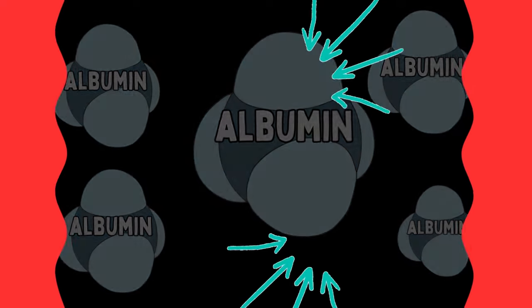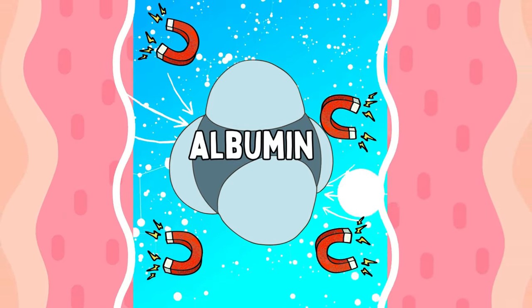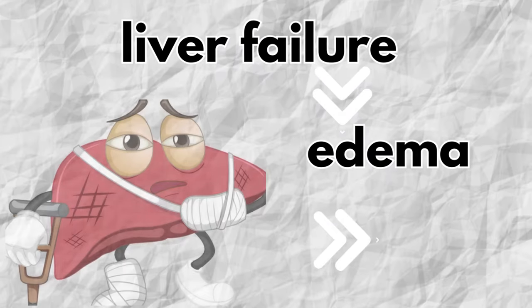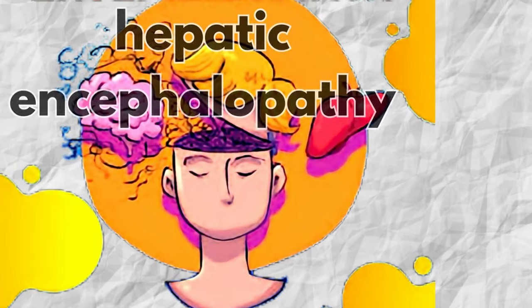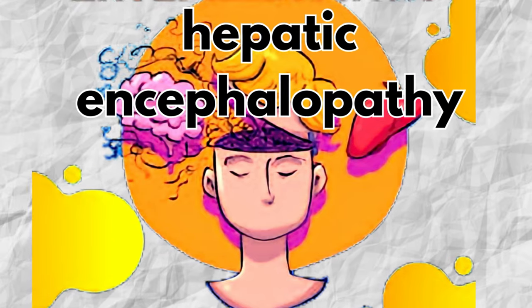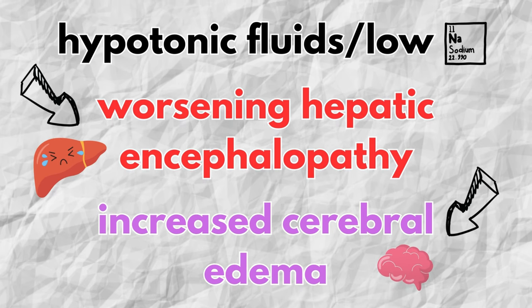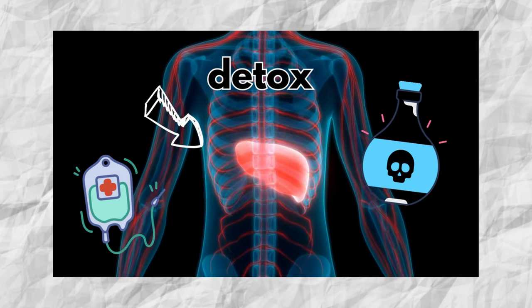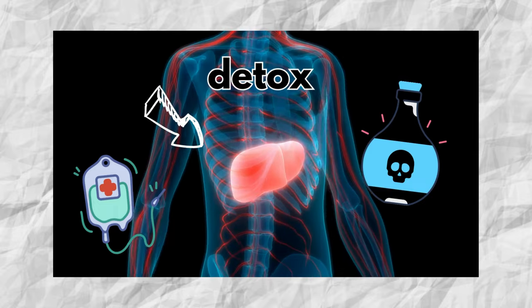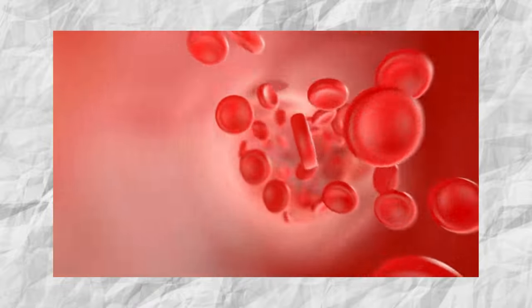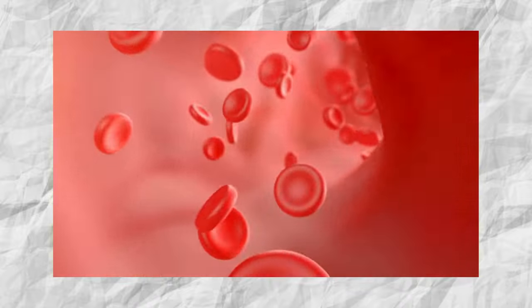Liver failure often results in decreased ability to produce proteins including albumin, which helps maintain oncotic pressure in the blood vessels and prevents fluid leakage into tissues, making patients more prone to fluid accumulation and edema. Liver failure also increases the risk of hepatic encephalopathy, a condition characterized by neurological dysfunction. Low sodium levels caused by hypotonic solutions can worsen hepatic encephalopathy and increase the risk of cerebral edema, which can be absolutely life threatening. Additionally, using hypotonic solutions may alter drug distribution and clearance, leading to unpredictable drug effects or potential toxicity.